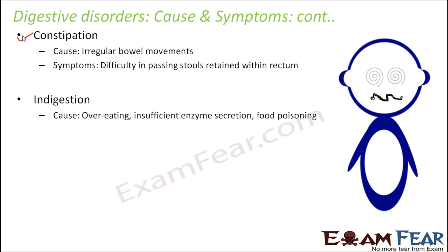Indigestion is caused by an imbalance between the food eaten and the enzymes available. Overeating is one cause — the enzymes secreted by the stomach, pancreas, or intestine become insufficient to digest that much food. Another cause is insufficient enzyme secretion, where the organs are not producing the right amount of gastric juice or pancreatic enzymes. A third cause is food poisoning, where microorganisms or worms in the food cause the food itself to become harmful once inside the body.